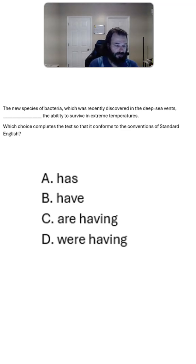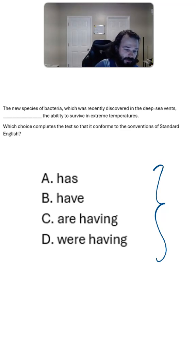Yeah, you can find the subject - the subject would be the species - but it's not always super obvious to find the subject. So what we want to do is really focus in on the four answer choices here. The four answer choices are four differently conjugated forms of the verb. And what we want to do is identify whether it's singular or plural.